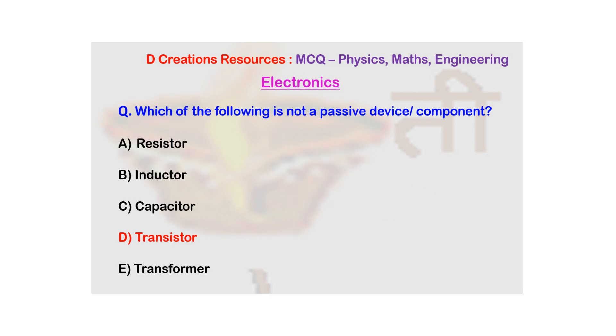So yes, option D that is transistor is the correct answer. Transistor is an active device, an active electronic device, while all the others like resistor, inductor, capacitor as well as transformer are passive devices or passive electronic components. Thank you.